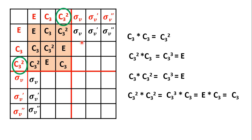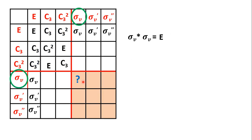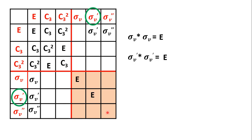Now let us look at other places where we get E. Sigma V followed by sigma V will be E, since two reflections lead to the original arrangement. Similarly, sigma V dash followed by sigma V dash will be E, and sigma V double dash followed by sigma V double dash will also be E. So one quadrant is now filled, containing only E, C3, and C3 square.